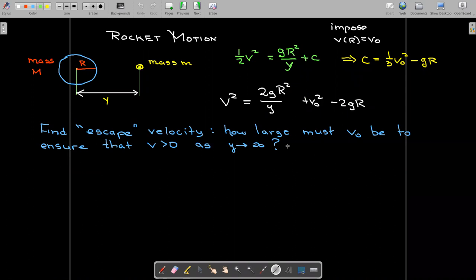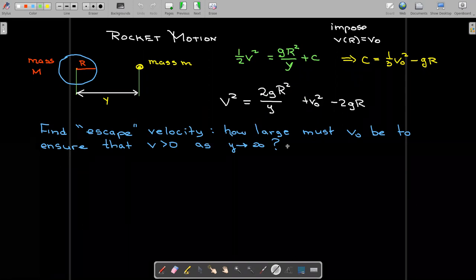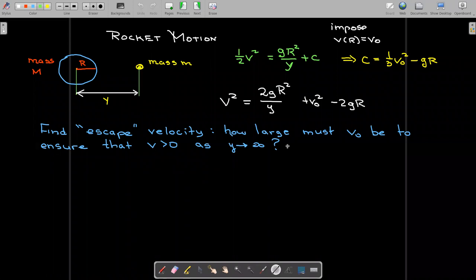And now we have an implicit solution where we're looking at v as a function of y. Now we can get interesting information here.